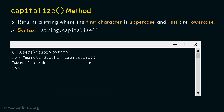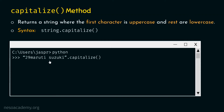Let's discuss one more example. This time we type: '29 maruti suzuki'.capitalize() — all characters are lowercase in this string, but the first character is a digit, not a letter. If we hit enter, we get the same string unchanged. The reason is that the first character is not a letter, so there is no point converting it to uppercase. That's how capitalize method works.